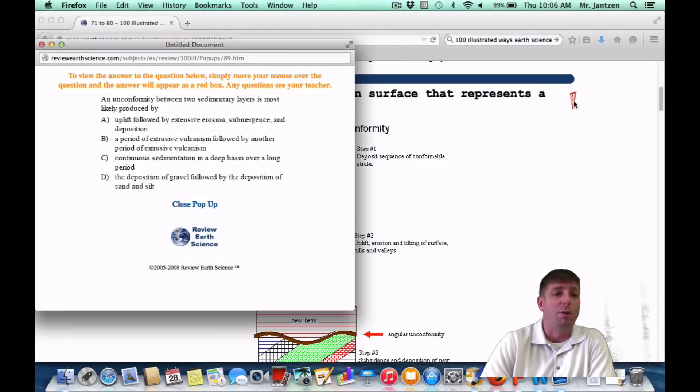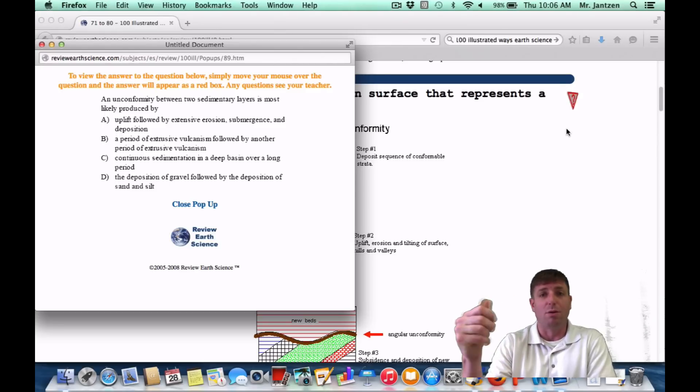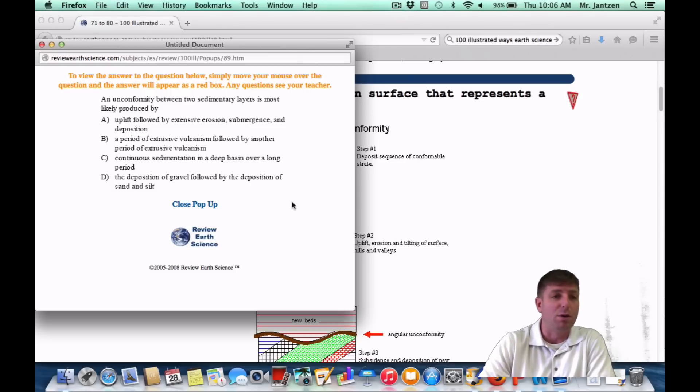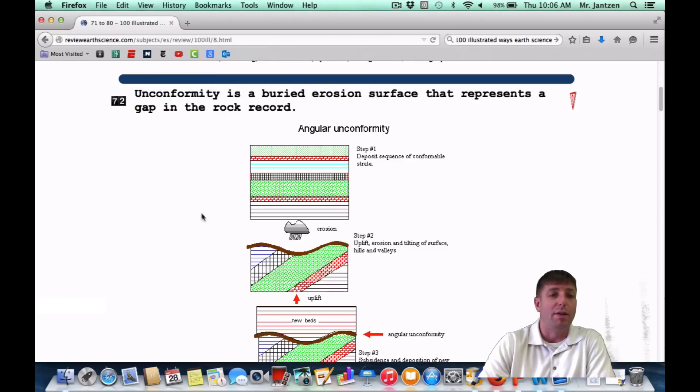If you're going to see a Regents question, it says an unconformity between two sedimentary layers is most likely produced by what? So once again, the three steps: emergence, erosion, submergence, or uplift, erosion, subsidence. Any one of those is fine, or here we're talking about choice A. Very good. That's an unconformity.